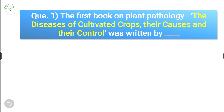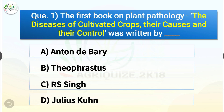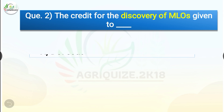Question number one: The first book on plant pathology, 'The Diseases of Cultivated Crops: Their Causes and the Control,' was given by whom? The options are Antony Berry, Theophrastus, R.S. Singh, or Julius Kuhn. The correct answer is option D, Julius Kuhn. The first book on plant pathology was written by Julius Kuhn.